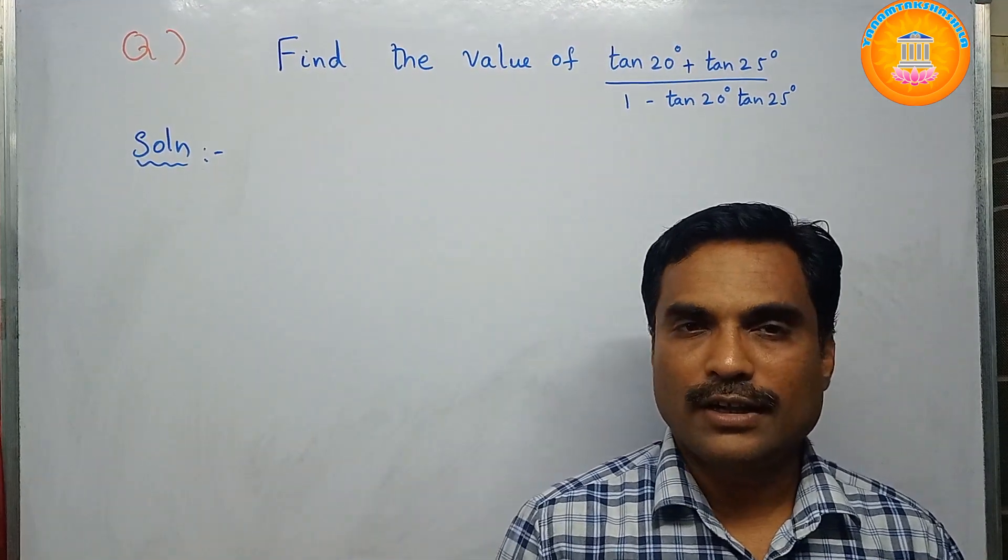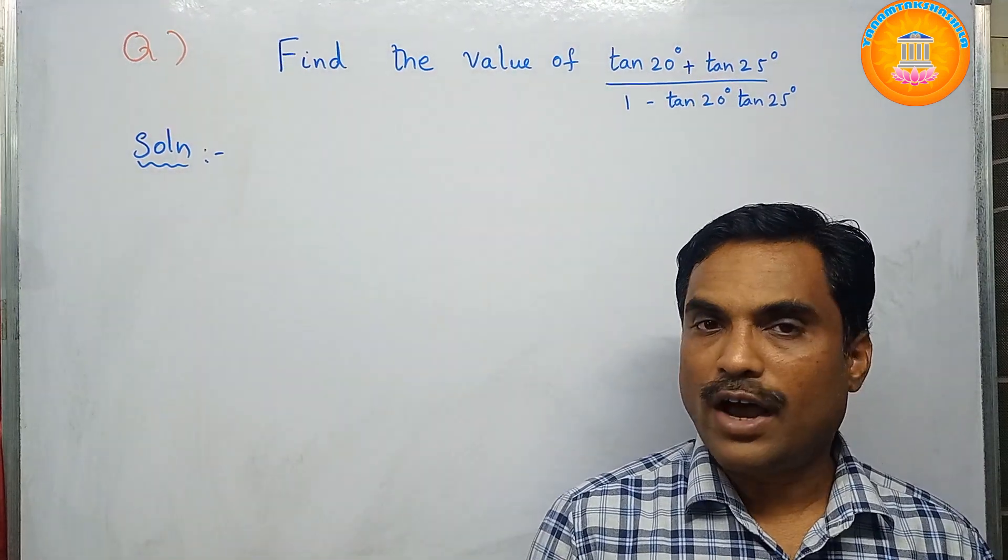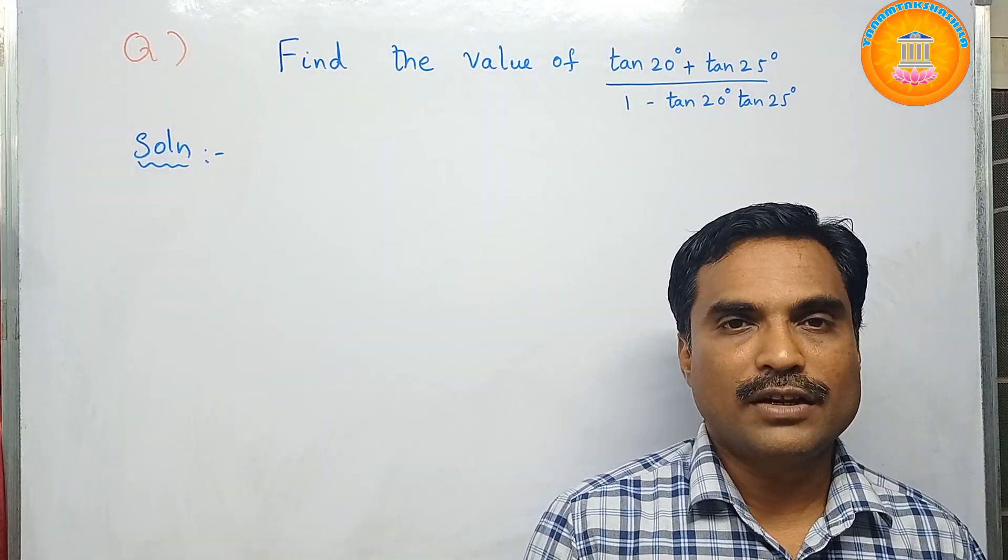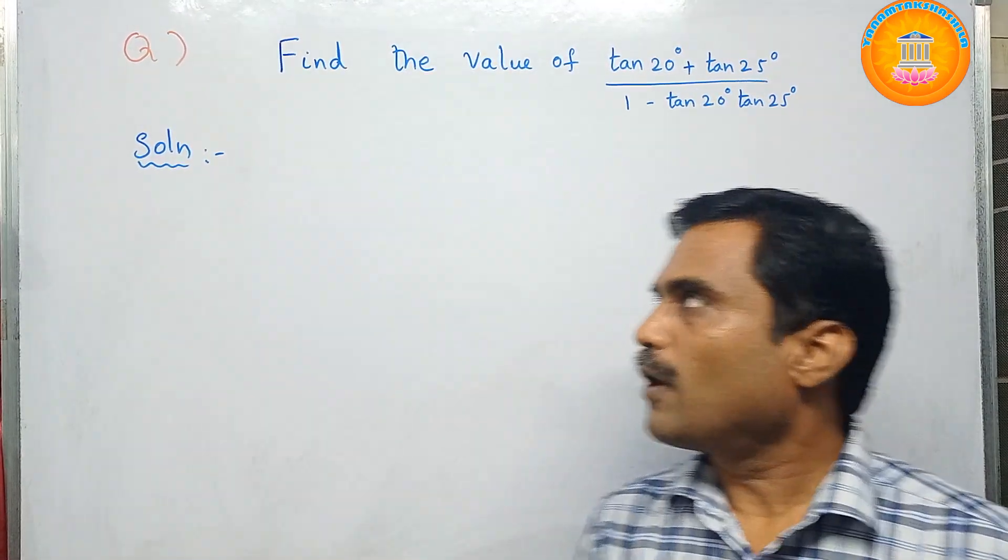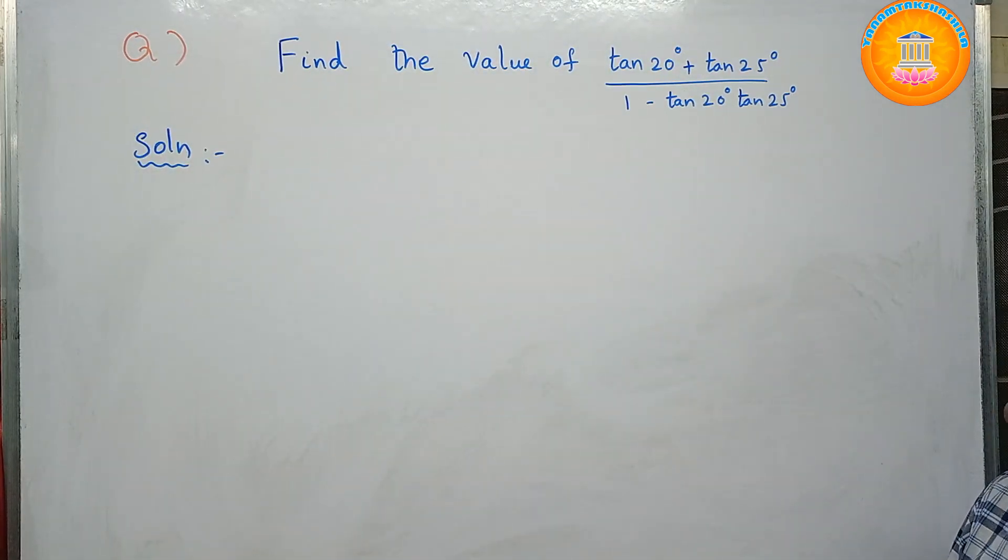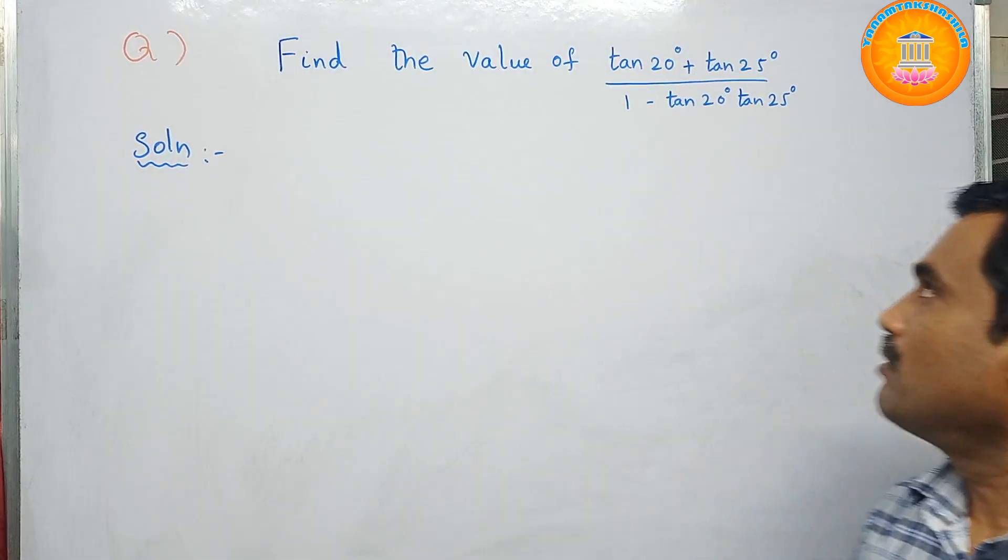Hi, welcome to my channel Yanam Kachisila. In this new video, I am going to solve a mathematical problem under the topic trigonometry. The problem is: find the value of tan 20° plus tan 25° divided by 1 minus tan 20° tan 25°.